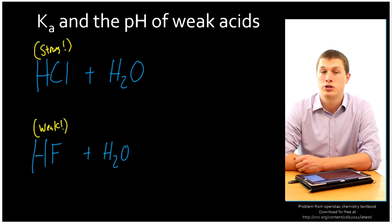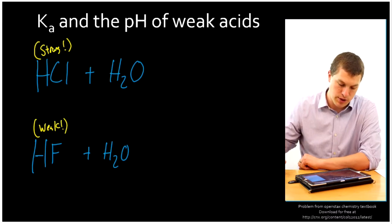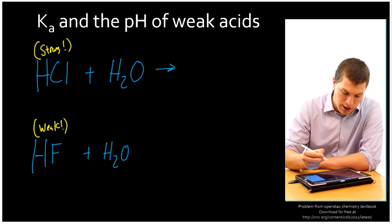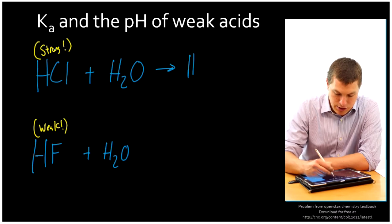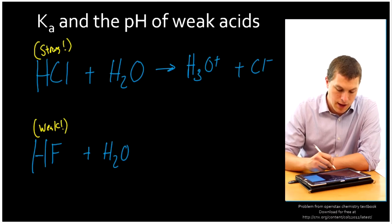Why is there a difference between strong and weak acids? Well a strong acid is one that completely dissociates, and so for example with HCl, when I mix it into water, I get H3O+, that's the hydronium ion, plus my chloride ion is left behind.